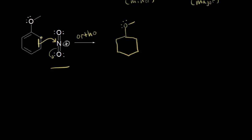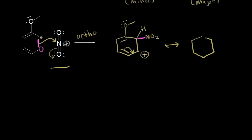Drawing the result of that nucleophilic attack, we still have our methoxy substituent, with the nitro group adding onto the ortho position. There's still a hydrogen attached to that carbon. These pi electrons over here and over here — the ones that formed a bond with the nitrogen — take away a bond from this carbon, so that carbon gets a +1 formal charge. We can show some resonance stabilization of this cation, moving these pi electrons over to draw another resonance structure.